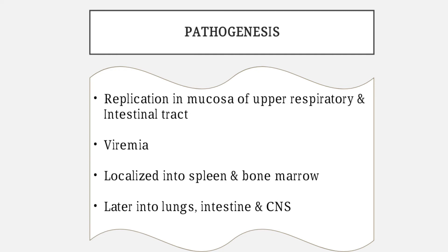Pathogenesis includes: replication of the virus first occurs in the mucosa of the upper respiratory and intestinal tracts, then it enters the blood causing viremia, becomes localized in the spleen and bone marrow, and is later transferred to various organs including the lungs, intestine, and central nervous system, causing nervous signs.